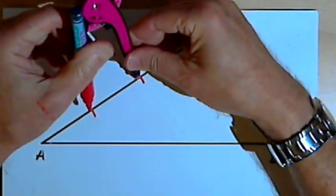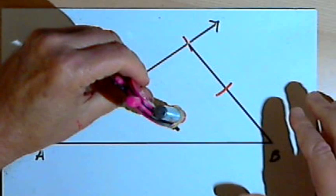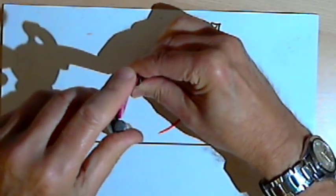Now I'm going to move the compass point to the second arc that I drew along the ray. And I'll draw an arc from there also.